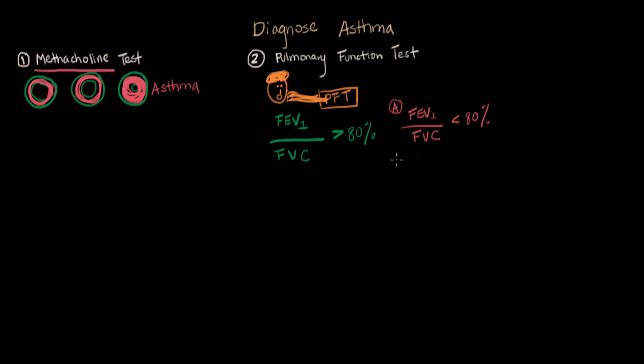So this forced vital capacity test with the ratio is one of a group of tests that's done with this machine. We call this spirometry. And spirometry can be done with the methocholine challenge or without at any time. But mathematically these numbers really tell us a lot about how your lungs are behaving when you're exhaling.